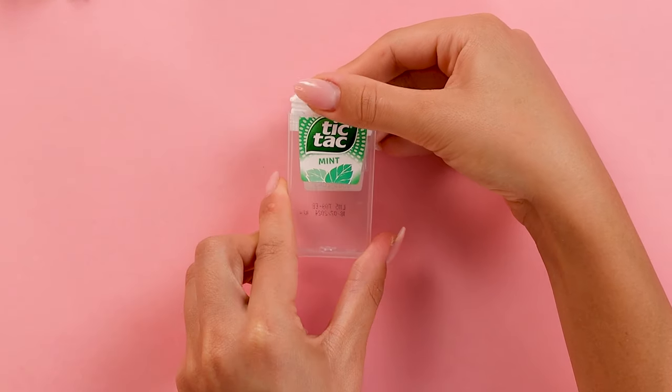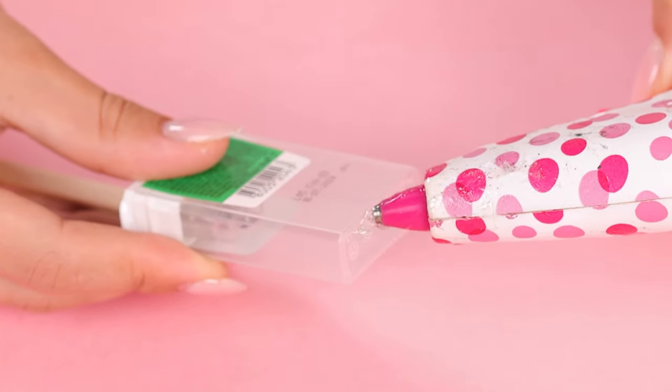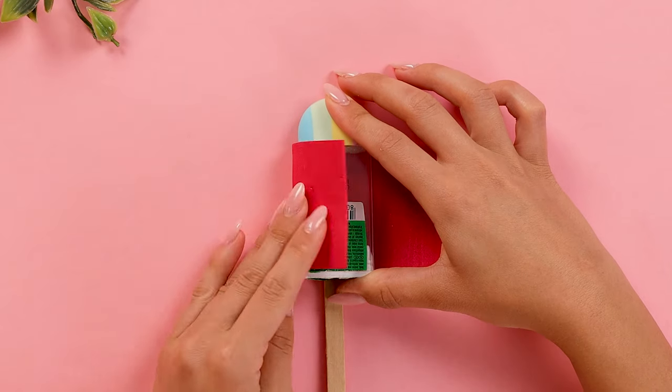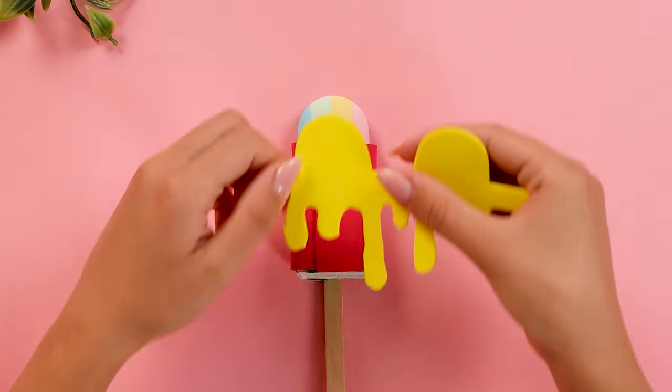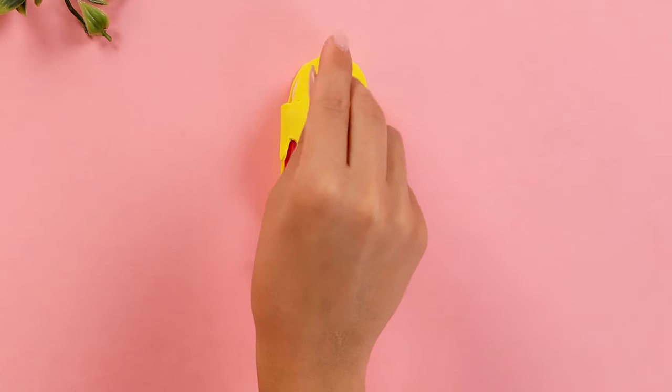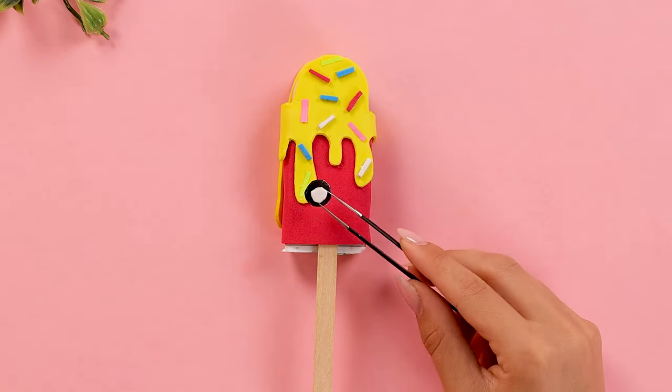We're turning an old tic-tac box into a super handy school tool. Let's make the top look like delicious melting ice cream. That's your eraser! The bottom? A secret sharpener for your pencils. Adding some sprinkles and witness the magic of recycling!